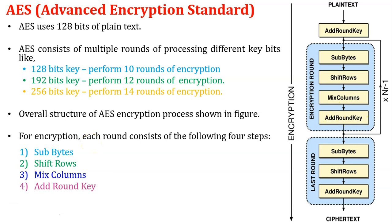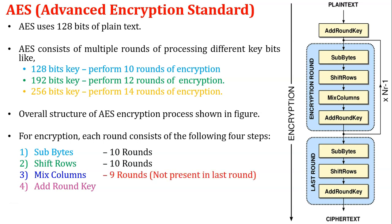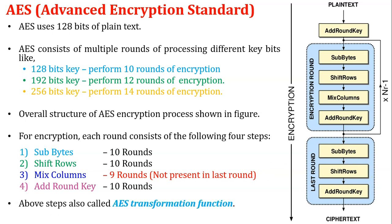For a 128-bit key in AES encryption, it performs 10 rounds. So substitution bytes perform 10 rounds, shift rows perform 10 rounds, mix columns performs 9 rounds — because mix columns is not present in the last round — and add round key is performed 10 rounds. These 4 steps are called AES transformation functions.